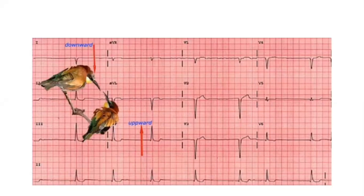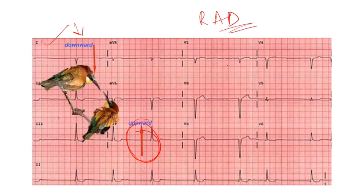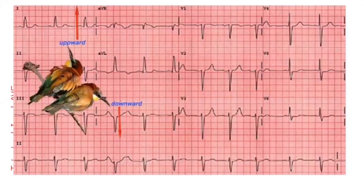Now see the next example — they are facing each other, like the beaks of a sparrow. Lead I is showing downward and AVF is showing upward, so this is right axis deviation. In the opposite case, Lead I is upward and AVF is downward — away from each other — that is left axis deviation.